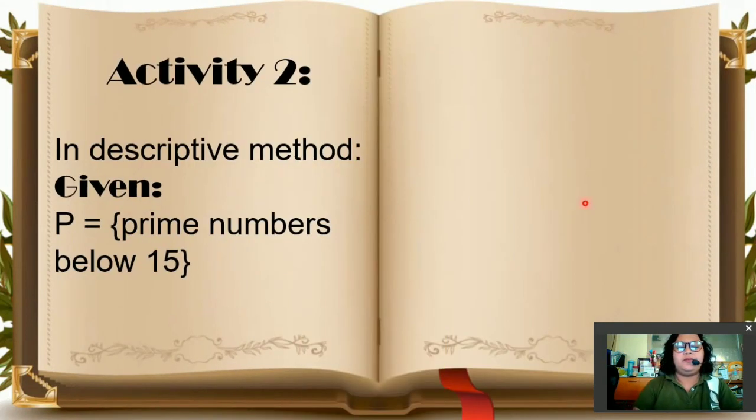So in activity 2, in descriptive method, the given is P, set P, prime numbers below 15. So you are going to complete the table. You are going to write an answer in the listing method. However, you are going to represent set P using listing method and using set builder notation. So what should be the answer?